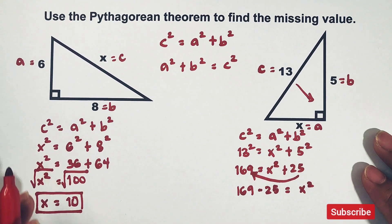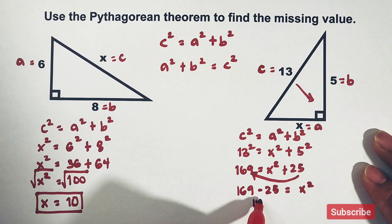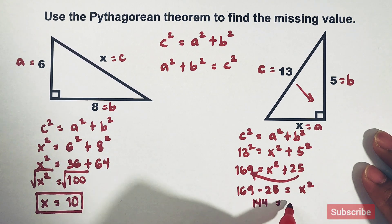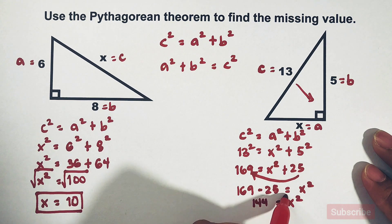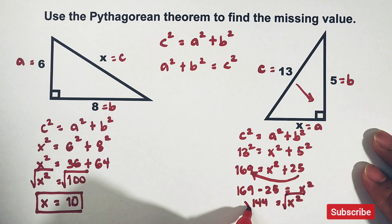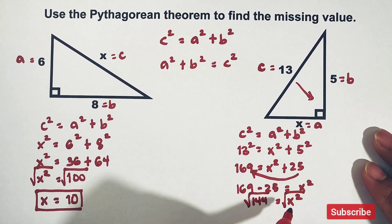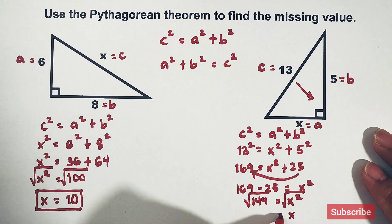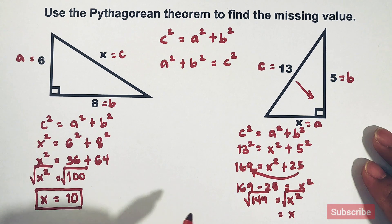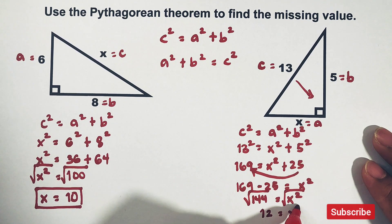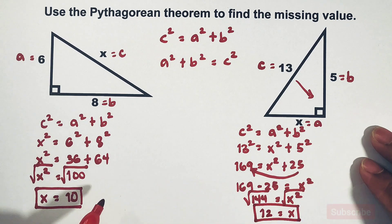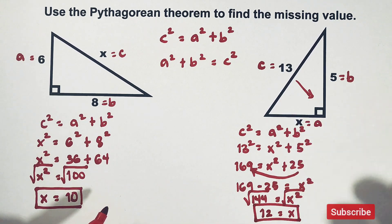Subtracting: 144 = x². To get the value of x, we extract the square root of both sides. The square root of x² is x, and the square root of 144 is 12. So x = 12 is the missing leg in this right triangle.